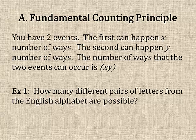Number one here. How many different pairs of letters from the English alphabet are possible? So there's two different events. There's one letter, then the second letter. In the English alphabet, there's 26 letters. So the first letter can be chosen out of 26 possibilities. The second letter can be chosen out of 26 possibilities. It does not say that you cannot repeat a letter.